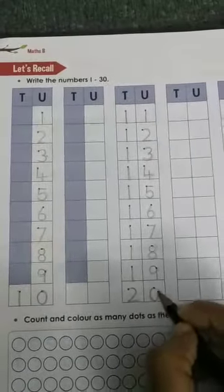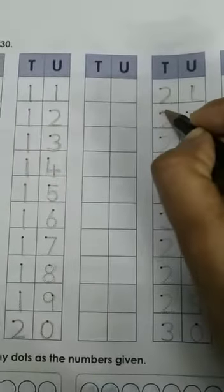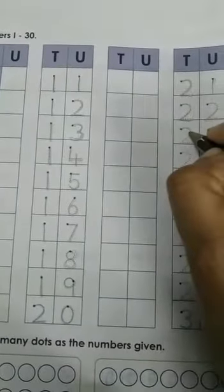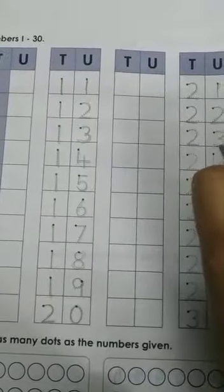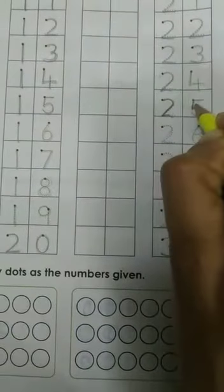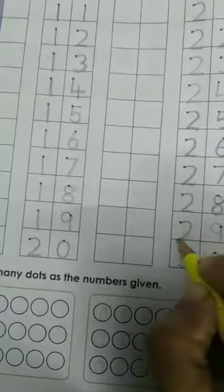21, 21, 21, 22, 22, 23, 23, 24, 24, 25, 25, 25, 26, 26, 27, 27, 28, 28, 29, 29 and 30, 30. So you have traced from 1 to 30.